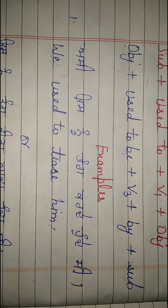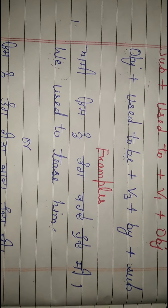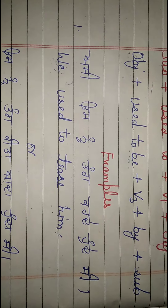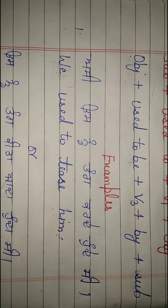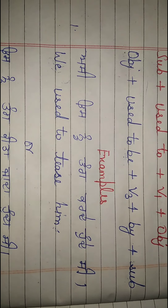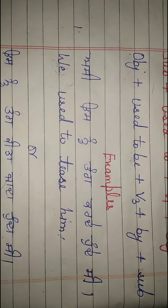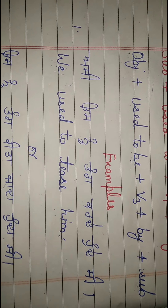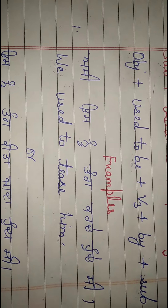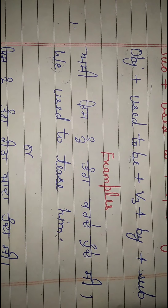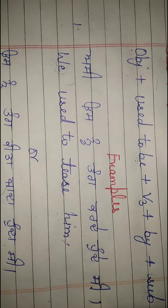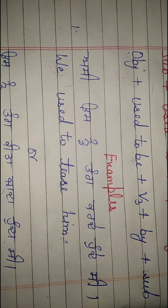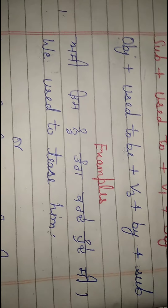For example: 'I used to take tea.' In the passive voice, tea becomes the subject, so we say: 'Tea used to be taken.' If we want to mention the doer, we say: 'Tea used to be taken by me.' This is the passive form.